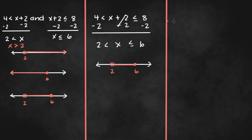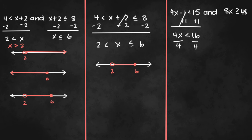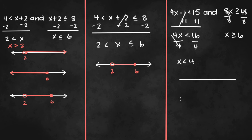A compound inequality that looks like 4x minus 1 is less than 15, and 8x is greater than or equal to 48. Solving: add 1 to both sides to get 4x less than 16, then divide both sides by 4 to get x is less than 4. For the second, divide both sides by 8 to get x is greater than or equal to 6. We can graph both of these on a number line and then combine them into one.